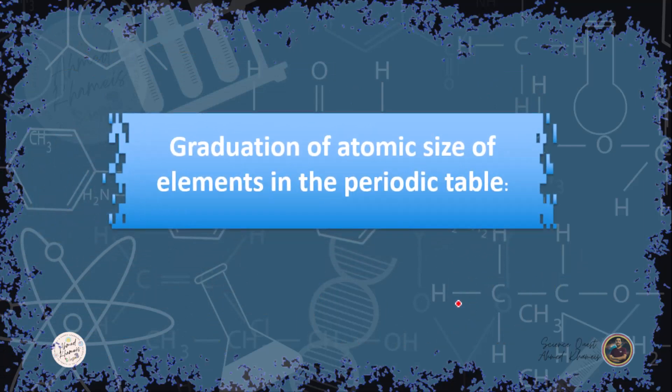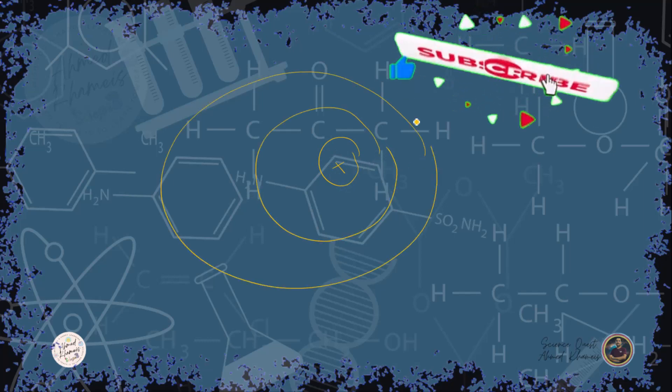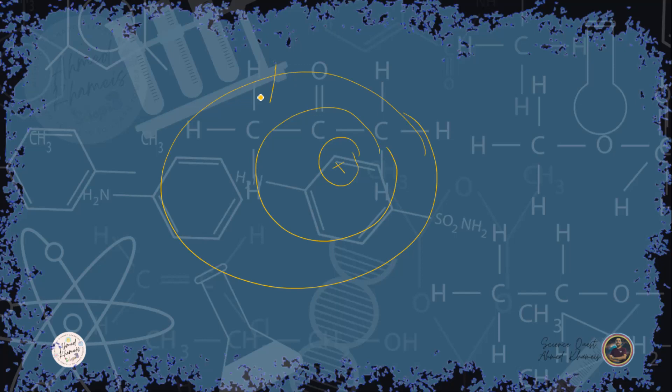Now, the graduation of atomic size in the periodic table. The atom consists of a nucleus with positive protons, and around the nucleus revolve the negative electrons. The atomic size is controlled by the attraction force between the nucleus and the outermost electrons. In groups, as we go from top to bottom, we add complete shells — each element increases from the previous one by a complete shell of 8 electrons. That makes it harder for the positive nucleus to attract the electrons, because the electrons repel each other with more force than the attraction force of the nucleus. So, from top to bottom, the atomic size increases.